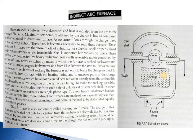However, balancing circuits permit the load to be distributed equally over three phases. Since the arc does not impinge directly on the charge, the risk of local overheating is eliminated. This is a diagram of the indirect arc furnace showing the charging holes, the charges, the supply, the two electrodes with the arc forming between them, and the tube shell.